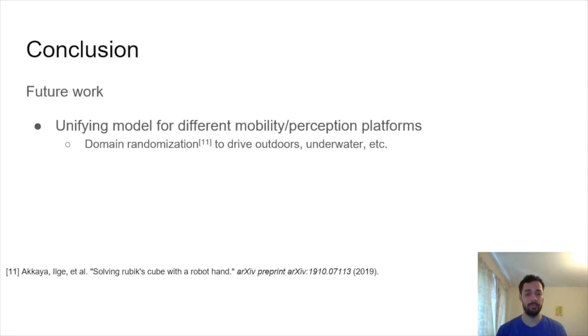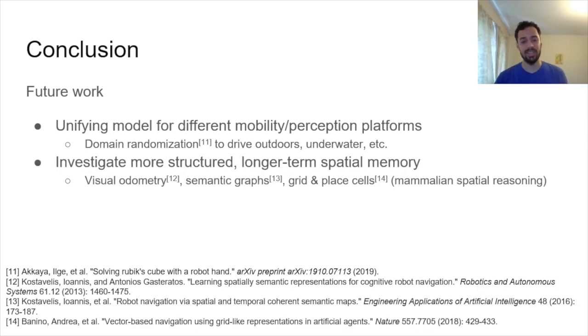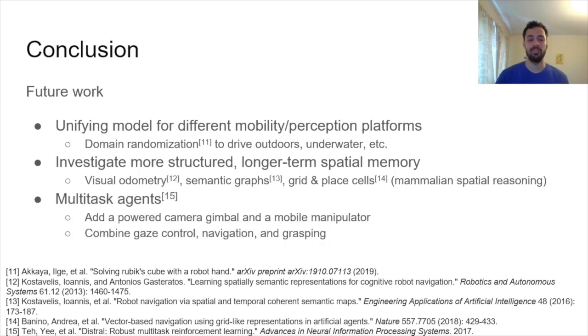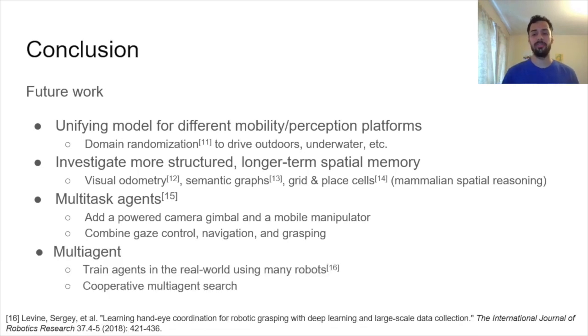Where can we go from here? Well, we can think about building a unifying model for different types of mobility and perception platforms. We can investigate more structured longer-term spatial memory, or we can even think about using multitask agents. So instead of just the navigation task, we can think about navigation and pointing tasks or navigation and grasping tasks together. And finally, how can we make this a cooperative problem? How can we take multiple different agents and train them to communicate and search for targets together?